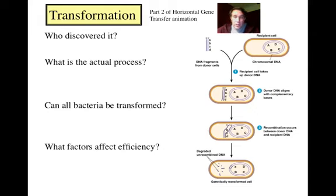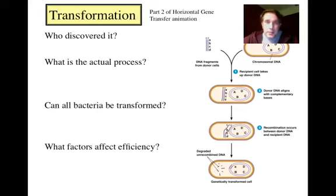It doesn't have to be super efficient, however, because once you get the plasmid into one cell and that cell replicates, it can pass on the new genes quite efficiently and spread antibiotic resistance or any number of other genes, depending on what you've recombined into the new host cell.